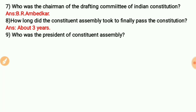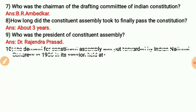Who was the President of the Constituent Assembly? He was Dr. Rajendra Prasad. Then, the demand for a Constituent Assembly was put forward by the Indian National Congress in 1936, in its session held that year.